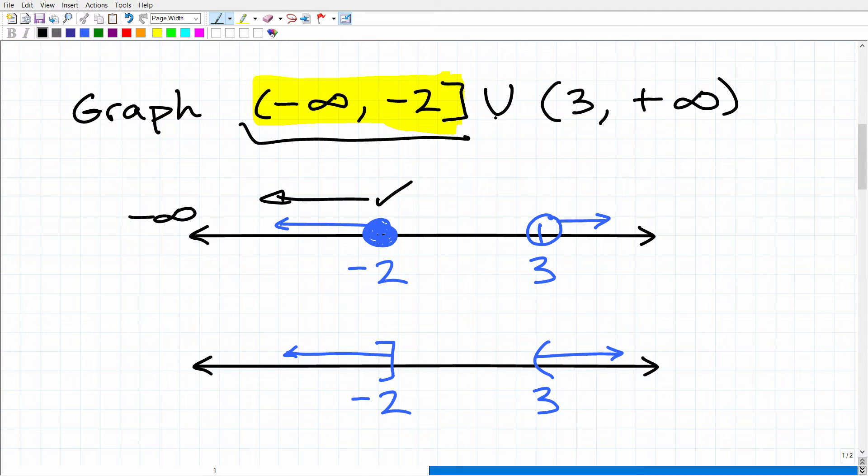Now, what does this U mean? Well, this is a union. So basically, we're going to have two situations here, two pieces to this graph. This is also an OR situation. We're talking about compound inequalities.